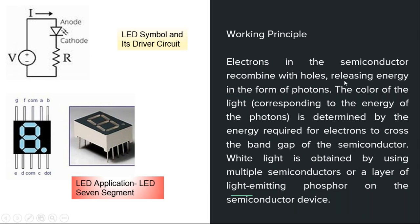Working principle: Electrons in the semiconductor recombine with the holes, releasing energy in the form of photons. The color of the light is determined by the energy required for electrons to cross the band gap of the semiconductor. White light is obtained by using multiple semiconductors or a layer of light-emitting phosphor on the semiconductor device. The emitted light has different colors depending on the semiconductor materials used.